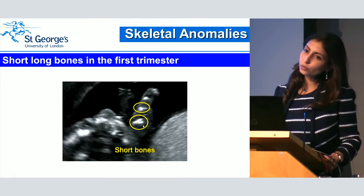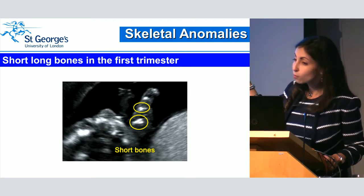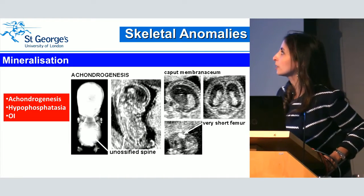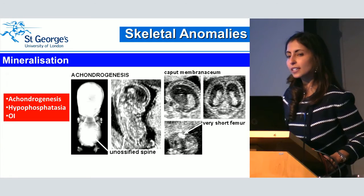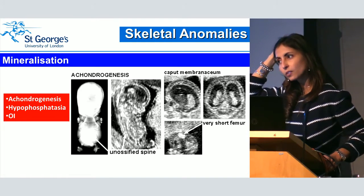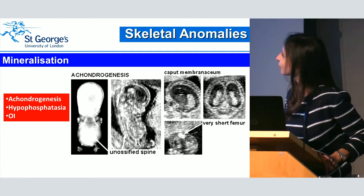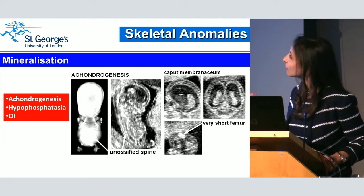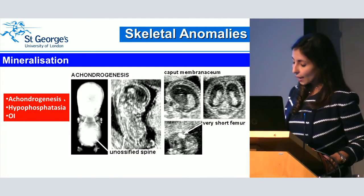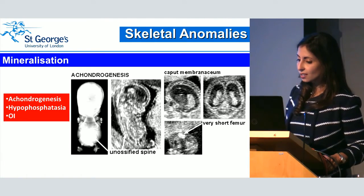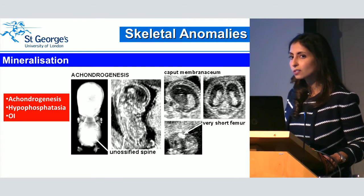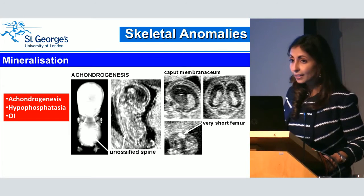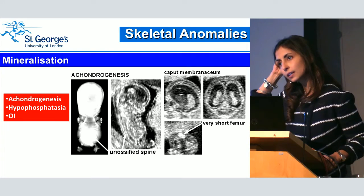Just to show how short these long bones can be in the first trimester — they're really, really short, and they can hardly be measured. The other thing is mineralisation, which often strikes you when you do the ultrasound scan. Characteristically, when you start looking at the brain, you can see it so clearly in the first trimester that you might subjectively think there is ventriculomegaly, because you see the ventricles so clearly and you don't see the skull. Hypomineralisation is a characteristic feature in achondrogenesis, osteogenesis imperfecta, and hypophosphatasia. Most other skeletal dysplasias do not have hypomineralisation. You often don't see the spine as well — the hypomineralisation can be seen in the skull bone or the spine.